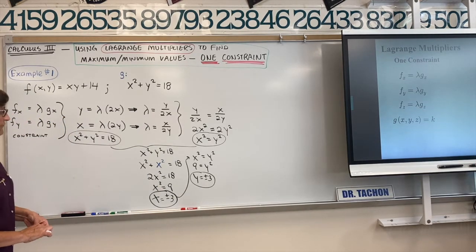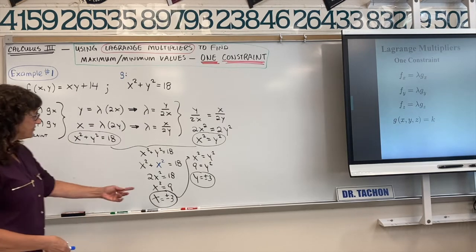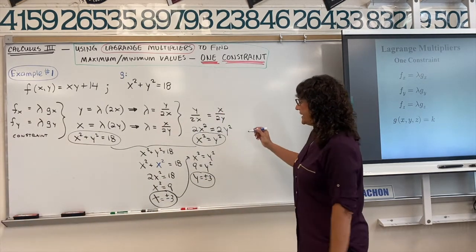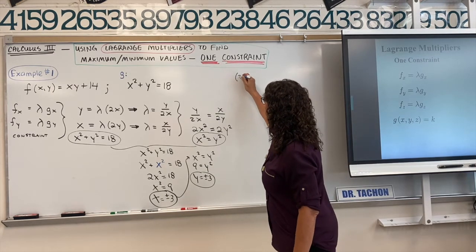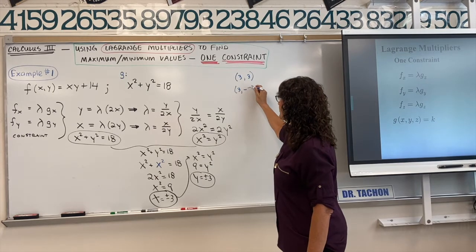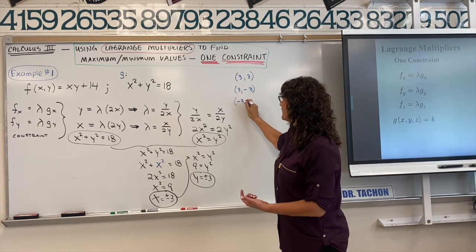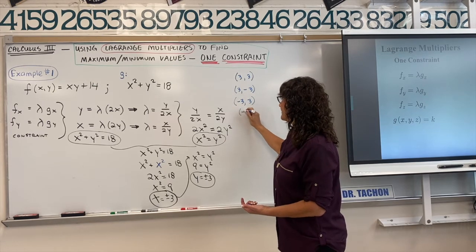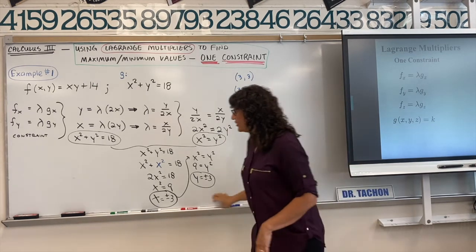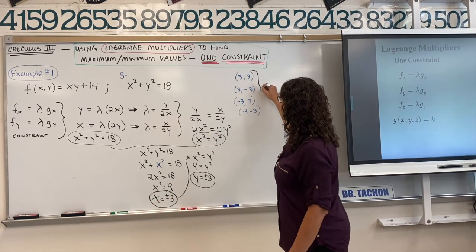Our critical points are all four combinations: (3, 3), (3, -3), (-3, 3), and (-3, -3). These are the critical points found using the Lagrange multiplier.